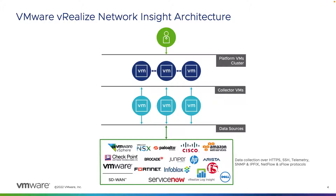As far as the architecture goes, the biggest difference when it comes to the platforms is that the platforms are going to be hosted by VMware and managed, scaled, and upgraded on the backend. The collectors will always be deployed within your data center, or can be deployed within a cloud environment such as AWS utilizing the available AMI. Depending on where your data sources are and what data you're collecting determines where you're going to want to deploy your collectors.